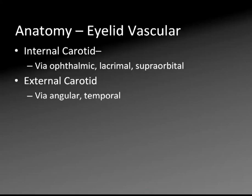Now let's talk about the vascular supply to the eyelids. The eyelids have supply from both the internal carotid and the external carotid — the internal carotid via the ophthalmic, lacrimal, and supraorbital vessels, and from the external carotid via the angular and temporal vessels.